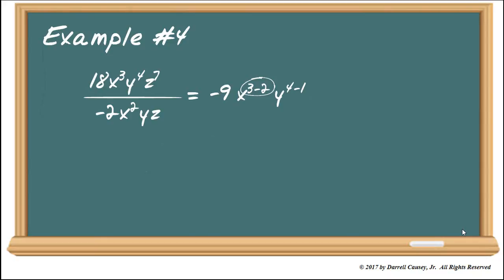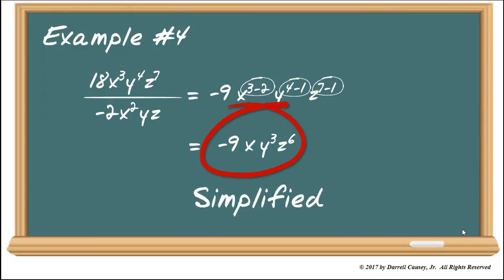Then we have y, four, minus one. And we're going to get three. And then we're going to have z to the seven minus one, which is going to give us six. And if we simplify all that, we're going to have negative nine x y cubed z to the sixth. And that is simplified, and we're done.